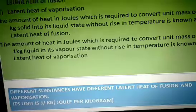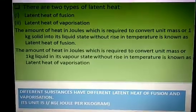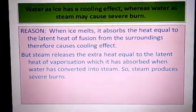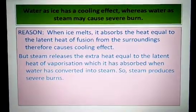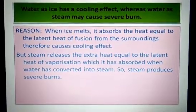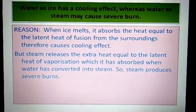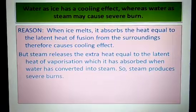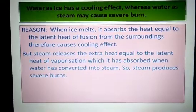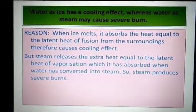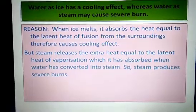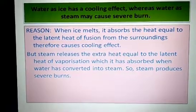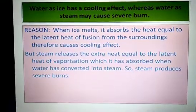There are many examples in our daily life where we see the involvement of latent heat. Example 1: Water as ice has a cooling effect, whereas water as steam may cause severe burns. Why so? When ice melts, it absorbs heat equal to the latent heat of fusion from the surroundings, and therefore causes a cooling effect. But steam releases extra heat equal to the latent heat of vaporization which it had absorbed when water was converted into steam, so steam produces severe burns.